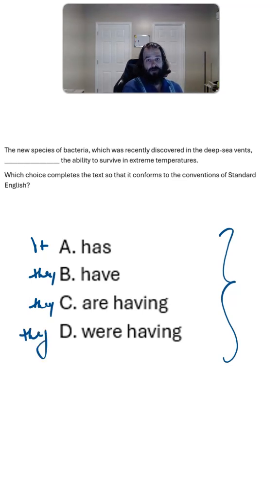The outlier answer is always going to be the correct answer. So if it says it, they, they, they, it's the one that says it.